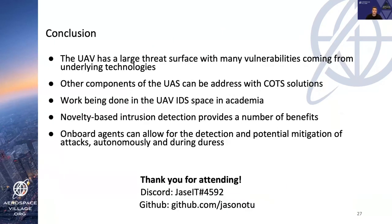In conclusion, the UAV has a large threat surface from many vulnerabilities, while other UAS components like the ground control station can be addressed with commercial off-the-shelf intrusion detection systems — but not the UAV itself. Work is being done in the UAV IDS space primarily in academics, and we've shown that novelty-based intrusion detection provides a number of benefits and has been shown to be effective, especially using an autoencoder. Onboard agents can allow for detection and potential mitigation of attacks autonomously even under duress. The same approach could also be used to detect component failures, such as abnormal motor vibrations.